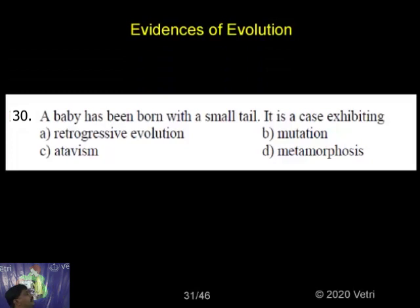A baby has been born with a small tail. In this case, excluding which of the following gives way of evolution, mutation, atavism, metamorphosis?